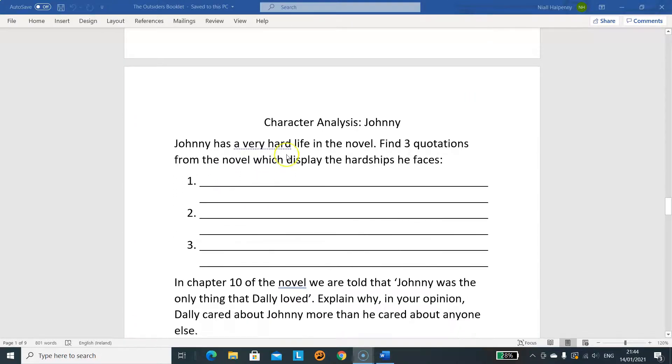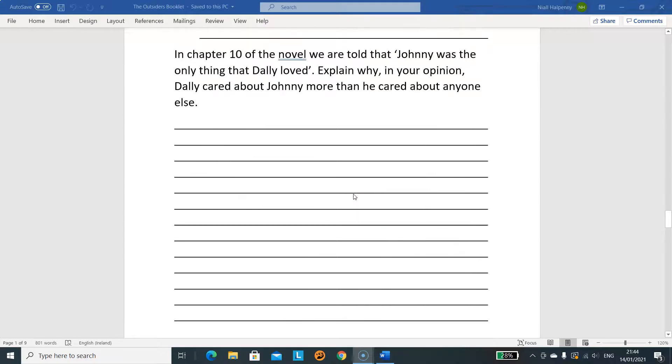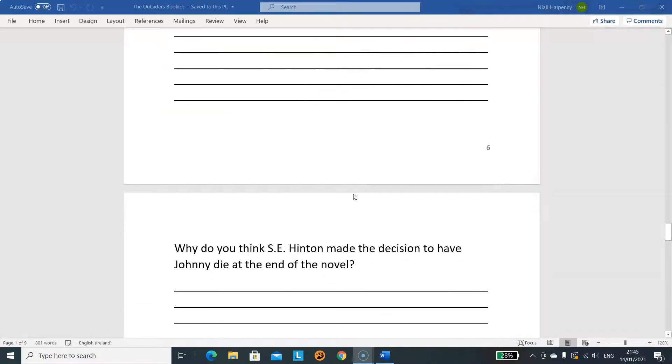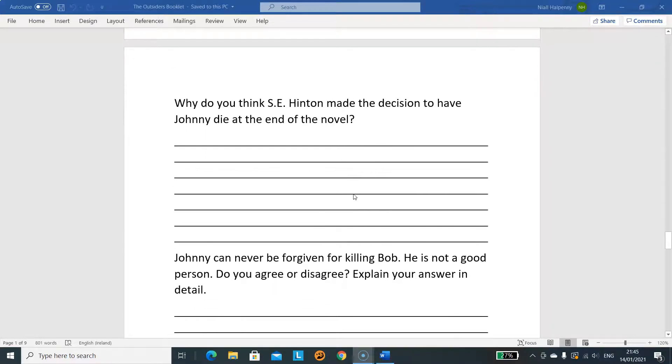After that you do character analysis of Johnny, very straightforward again. Johnny had a hard life. Again, three quotations. There's a shorter space given for the different questions about Johnny. The first one: in chapter 10 of the novel we are told Johnny was the only thing that Dally loved. Explain why, in your opinion, Dally cared about Johnny more than he cared about anyone else. This is again based on the novel, not just randomly you thinking. Please base this on what you know from the novel. You all know this, guys. I think we discussed this in lesson actually, why he cares about Johnny, but I want two specific reasons here. It is a more difficult question than the ones on Ponyboy. That's why there may be a little bit shorter space than what we looked at for Ponyboy.